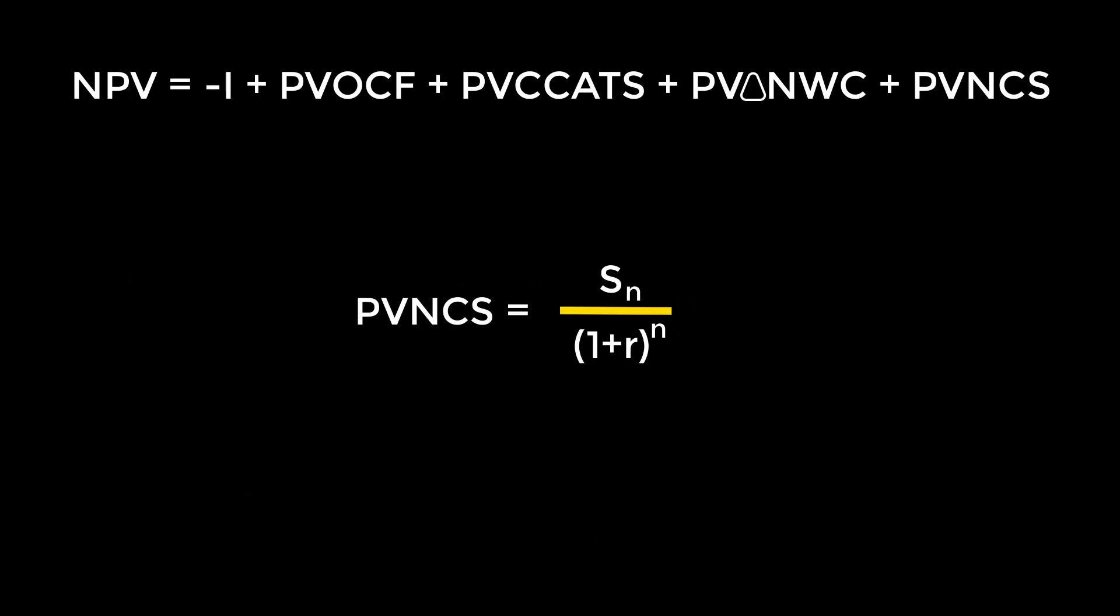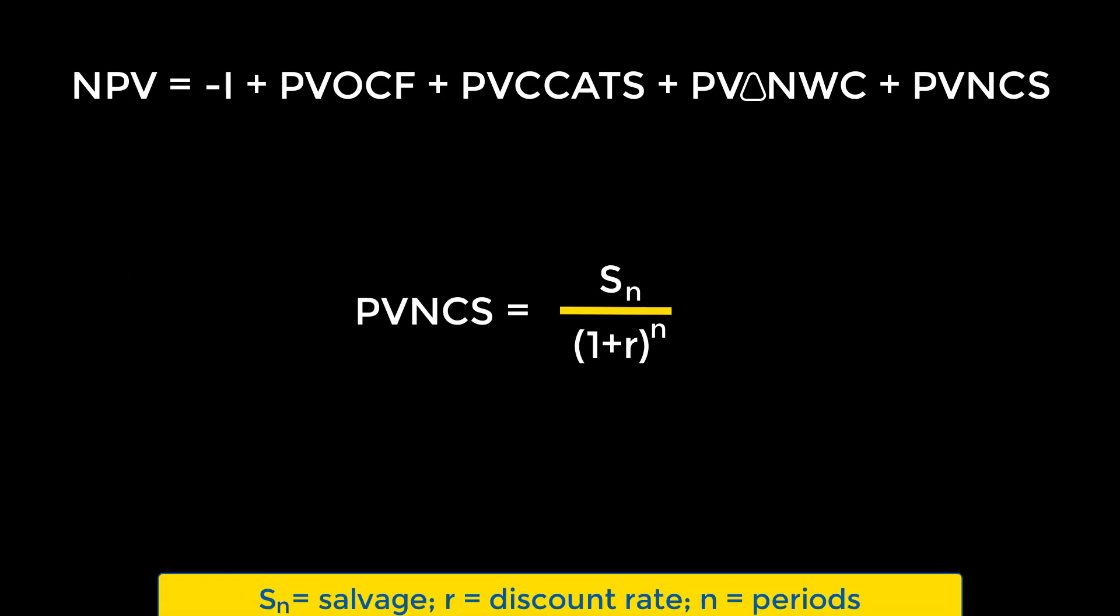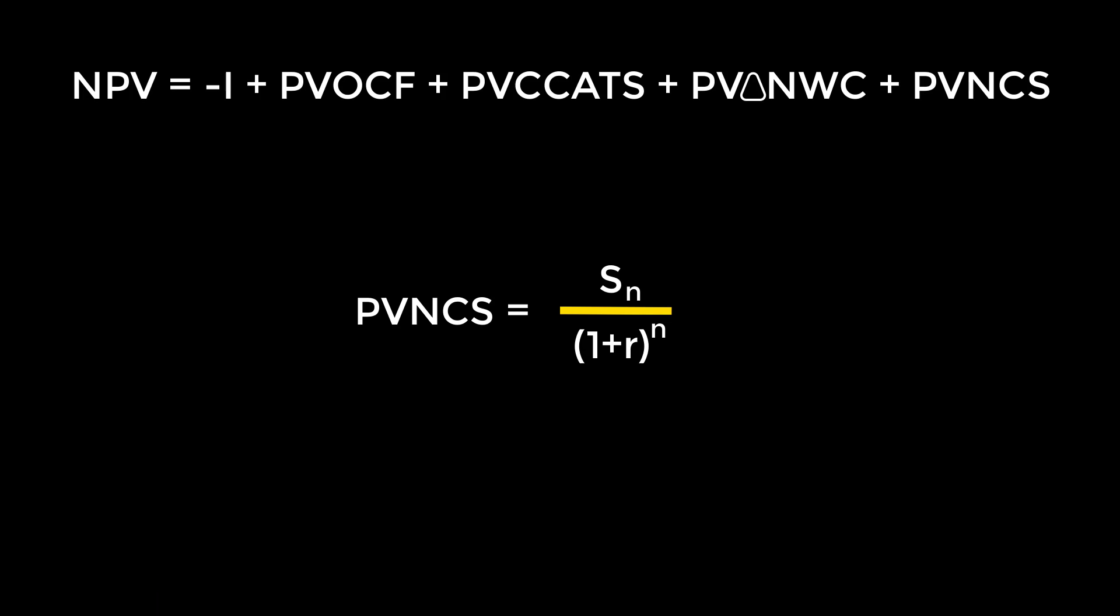Finally, let's talk about PVNCS. Again, S sub N is the salvage value, R is the discount rate, and N is the number of periods. If the problem states that the salvage value is 0, then this entire equation also becomes 0, and like part B from the PVCCATS equation, we can ignore it entirely.